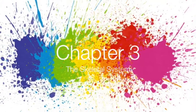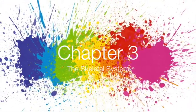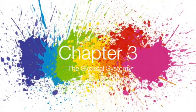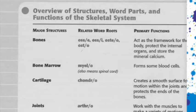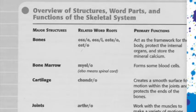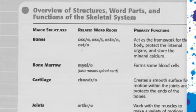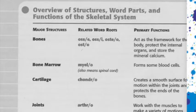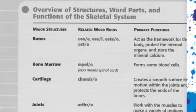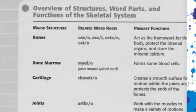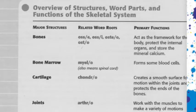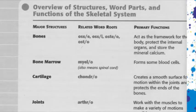Hey everybody, it's chapter 3, the skeletal system. Let's get started. In the overview of the skeletal system, we have major structures — of course bones. They act as the framework for the body, protect the internal organs, and store the mineral calcium.